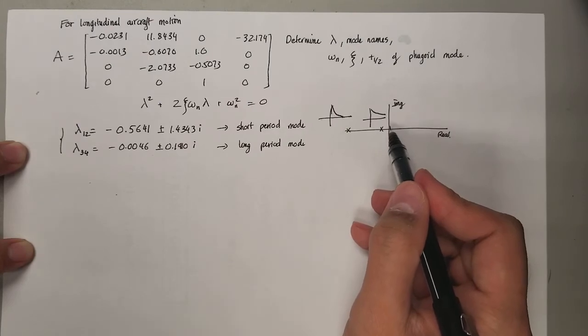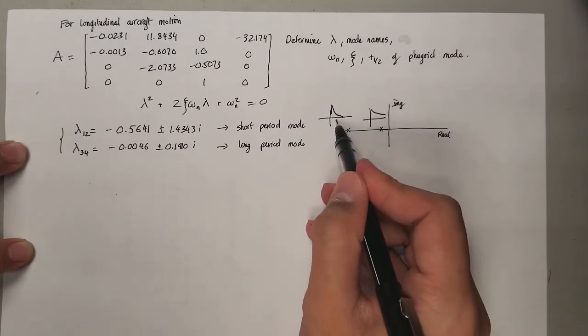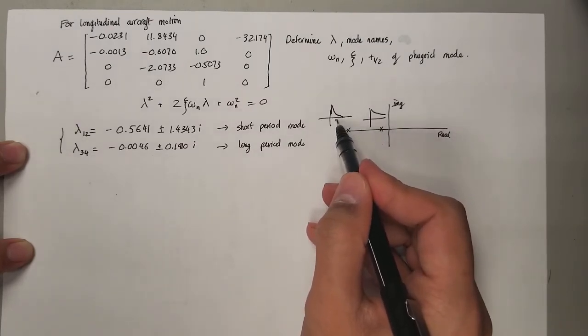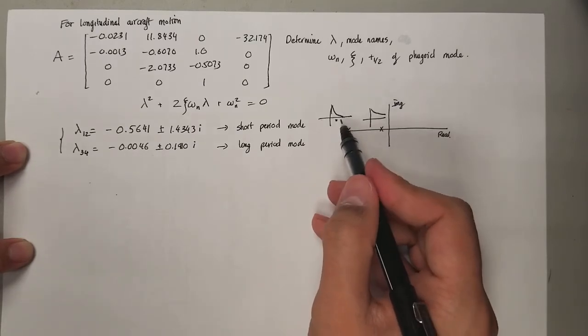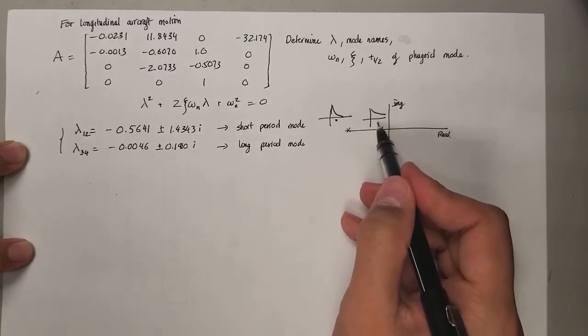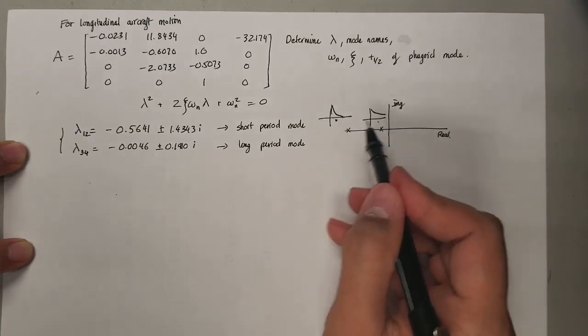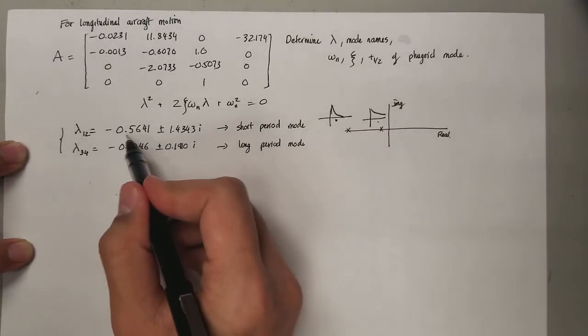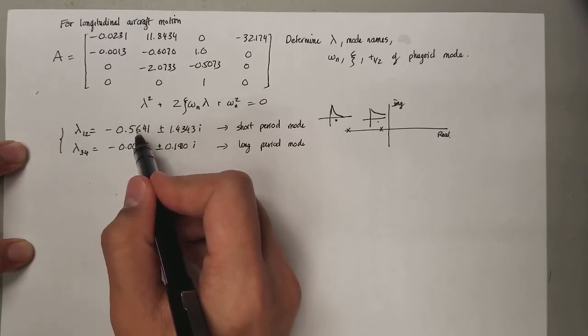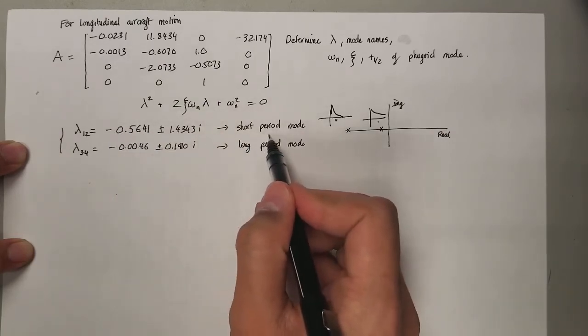As you go more negative, it's going to reach the neutral axis much faster than the one close to zero. This is the short period because it's damping really fast, and this takes a lot of time to damp the oscillation. That's why the one with the more negative real component is going to be the short period.